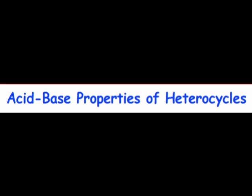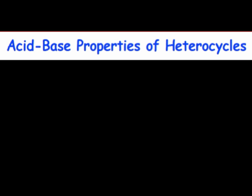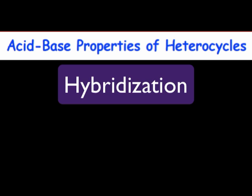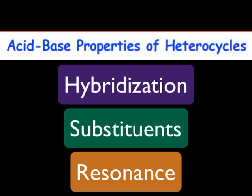We'll see that pKa differences between heterocycles result from three factors: the hybridization of lone pairs, the nature of substituents attached to the ring system, and resonance delocalization in charged heterocycles. For each factor, we'll set up a comparison that highlights its importance.